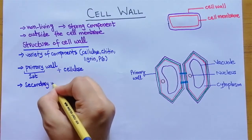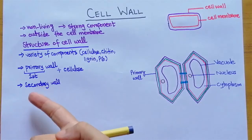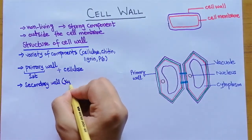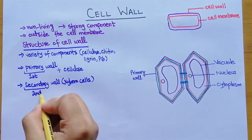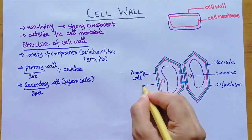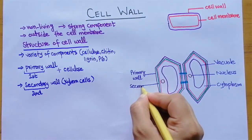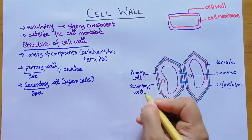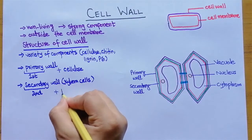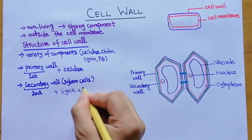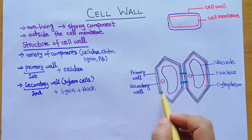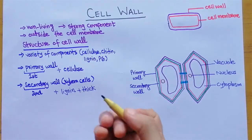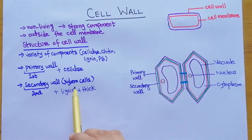After the primary wall, a secondary wall is present, but not all cells have a secondary wall. Some special cells such as xylem cells contain a secondary wall. The green color layer shown here is actually the secondary wall, and it is made up of lignin. It is very thick — as you can see, the outer layer is very thin but the inside green layer is very thick. Along with lignin it may contain some other chemicals, and it is present in xylem cells but not in all cells.